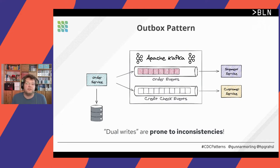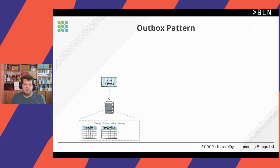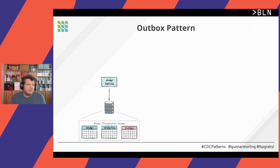So how can we overcome this? This is where the outbox pattern comes in. The idea is: if you can't update multiple resources atomically, always update a single one — your own database. When a new request comes in, say for placing a purchase order, the service updates its internal table model — its order table, lines table, and so on — and within the same transaction also writes a record to a separate table called the outbox table.